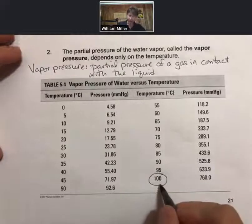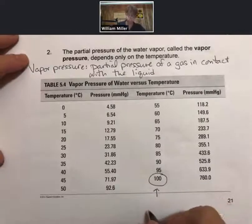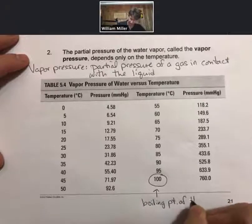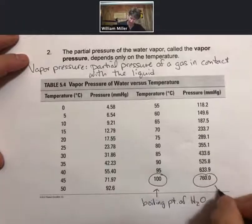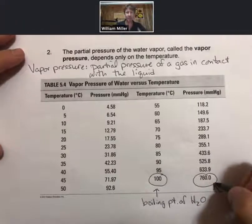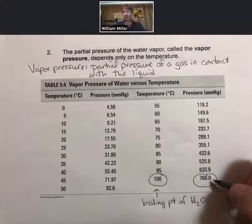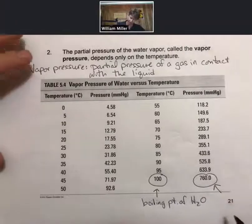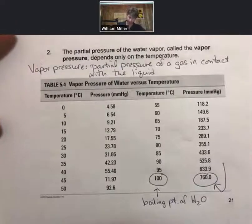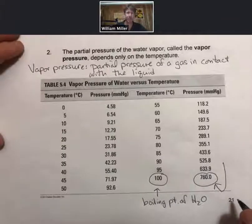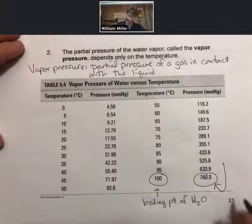At a hundred degrees Celsius, which is the boiling point of H2O, the vapor pressure is equal to one atmosphere, which is usually the atmospheric pressure. So one definition of boiling is the temperature at which the vapor pressure equals the atmospheric pressure. The note we want to write here is that the boiling point of H2O is when vapor pressure equals atmospheric pressure.